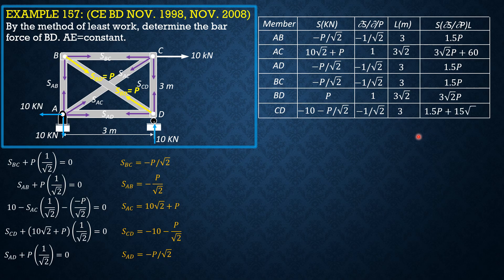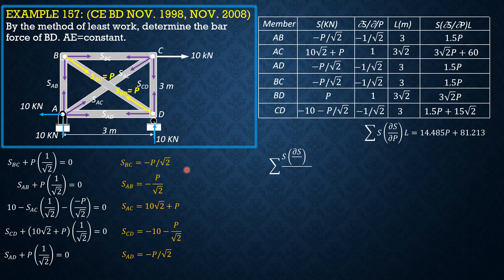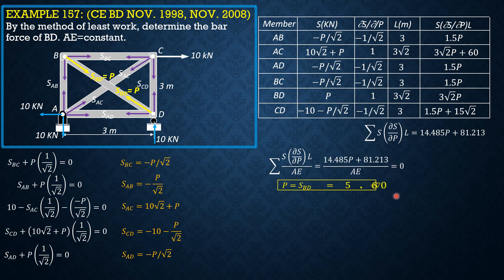Member CD has force negative 10 minus P over square root of 2, derivative negative 1 over square root of 2, length 3 meters, product 1.5P plus 15 square root of 2. Adding all terms, the summation of S times (∂S/∂P) times length equals 14.485P plus 81.213. Dividing by AE and equating to zero (since internal work by BD equals zero): 14.485P plus 81.213 equals zero. Therefore P equals negative 5.607 kN — compression. So SBD equals 5.607 kN compression.